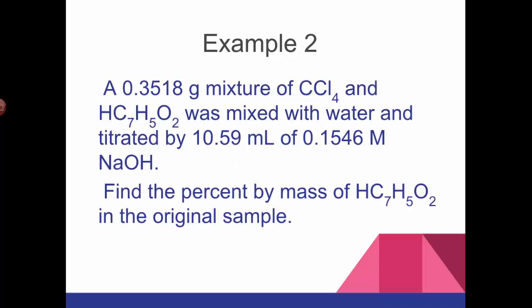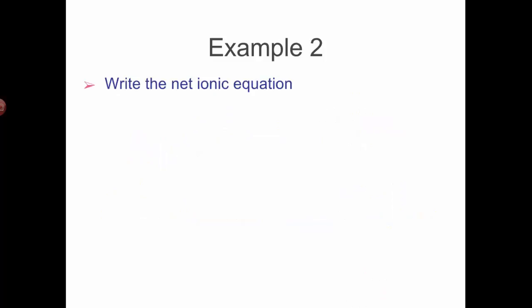Let's take that 0.1546 molar sodium hydroxide and titrate a mixture. This mixture contains a non-acidic compound, carbon tetrachloride (CCl4), and benzoic acid, which is a weak acid. We're going to use this base that we just standardized to titrate this mixture. The base is only going to react with the benzoic acid - the CCl4 won't react at all. We have this 0.3518 gram mixture and we're titrating it with the sodium hydroxide. It takes us 10.59 milliliters of this base to reach the endpoint. Now we're going to figure out how much of the original 0.3518 grams is benzoic acid.